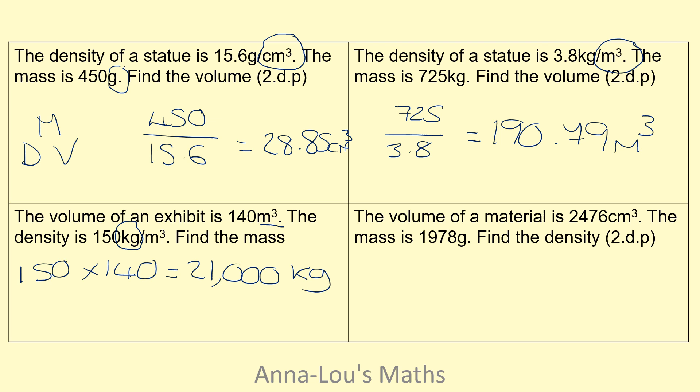Last one. The volume of a material is 2,476 centimeters cubed and the mass is 1,978 grams. Find the density. So I'm looking for density this time, so it's mass divided by volume. My mass is 1,978, my volume is 2,476. So if I do those, I get 0.80 grams per centimeters cubed.